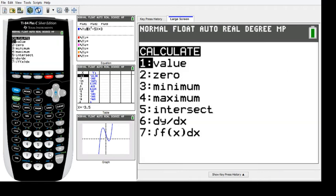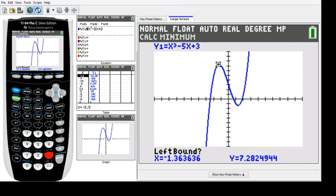Move the cursor to the left of the minimum and press Enter for the left bound. Then move to the right side for the right bound. Press Enter, then Enter one more time.